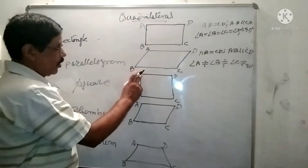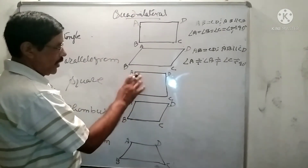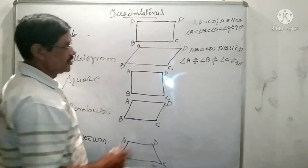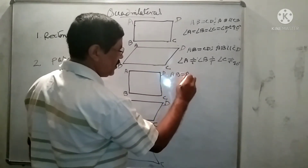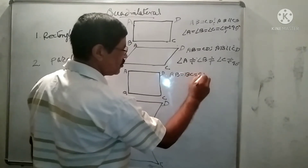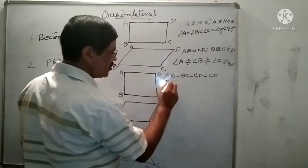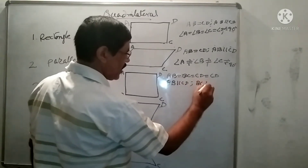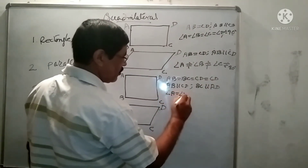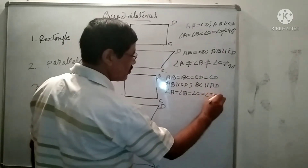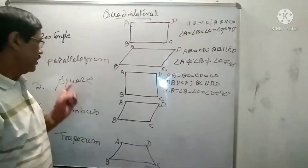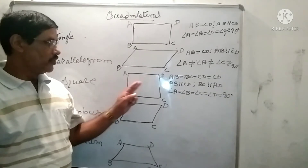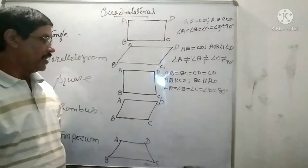Next, the square. A quadrilateral whose four sides are all equal, opposite sides are parallel, and all angles are 90 degrees is known as the square. Here AB equals BC equals CD equals DA. And opposite sides AB is parallel to CD, and BC is parallel to AD. All four angles — angle A equals angle B equals angle C equals angle D equals 90 degrees.